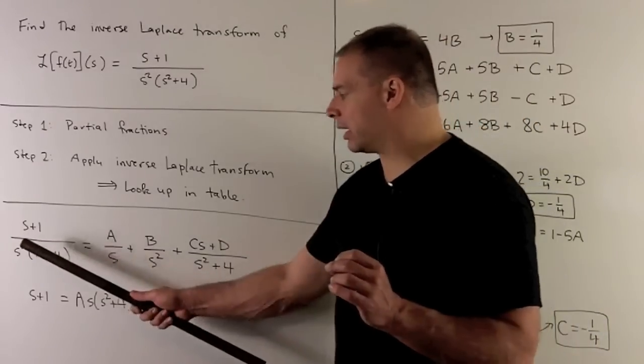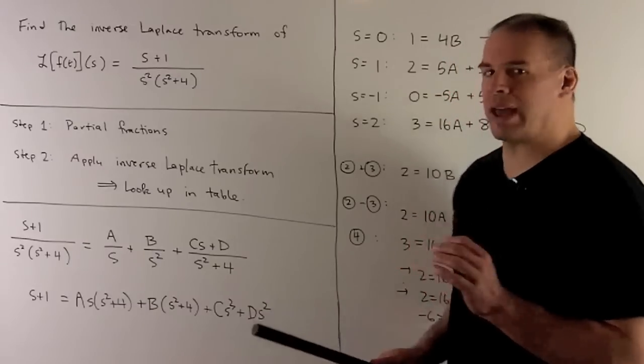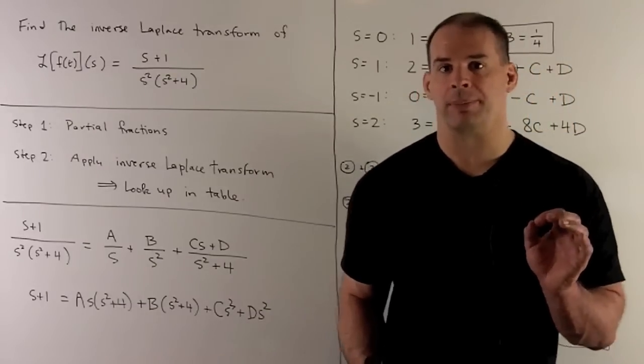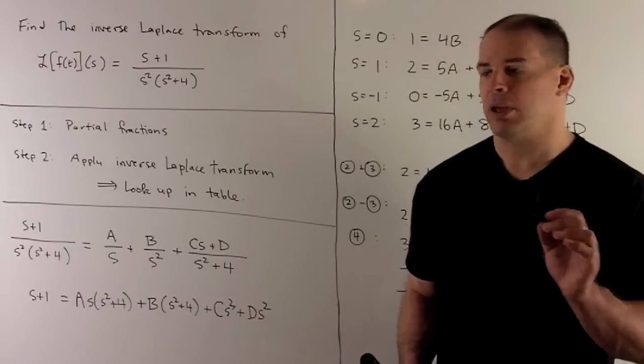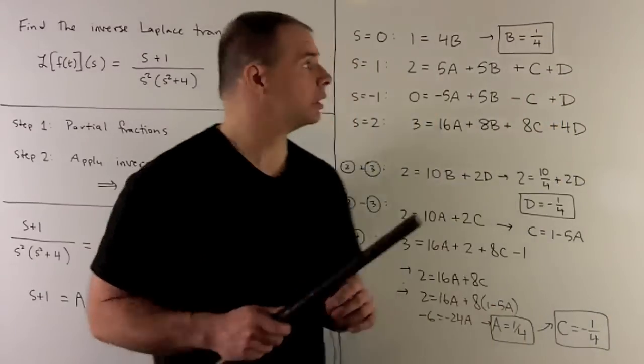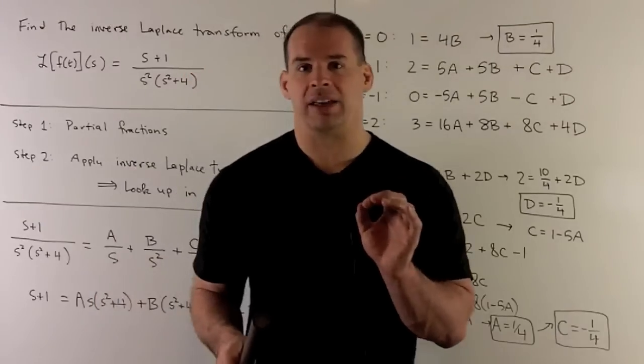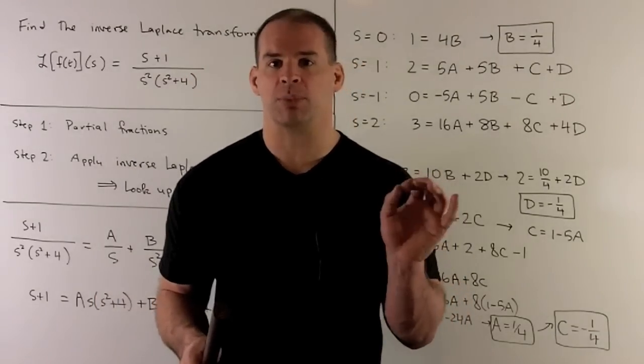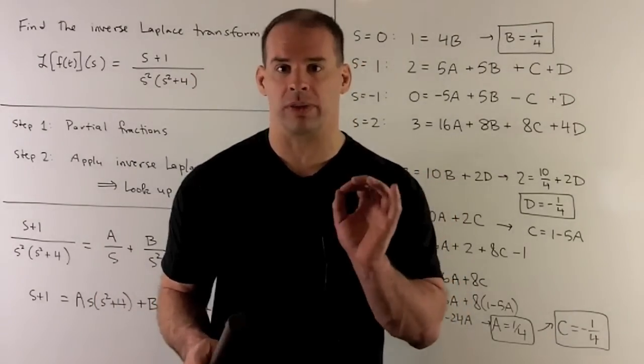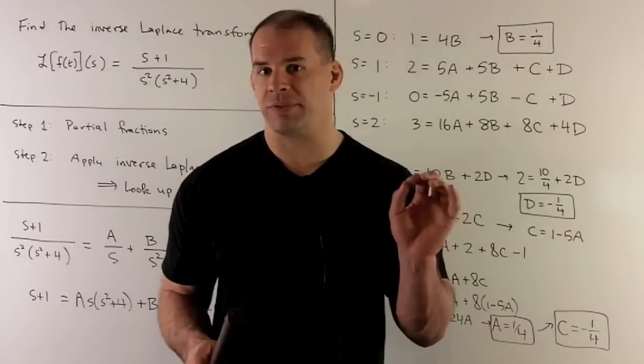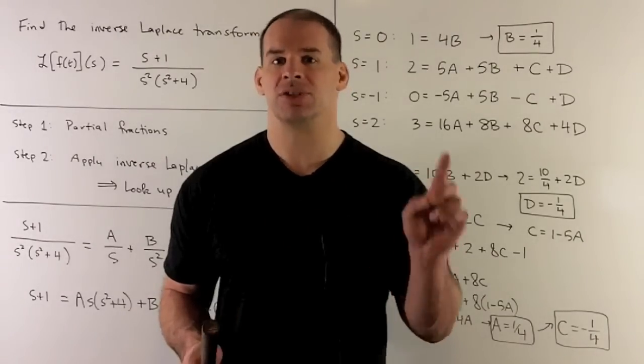Clear out the denominator, and then what we're going to do is, in this case, we only have one zero that we can target. It's going to be s equals zero, so we'll put that in. Then, we're just going to have to pick numbers, and in this case, we'll pick them small enough that we can work with it. So, we'll get four equations and four unknowns, and then we can just solve away.